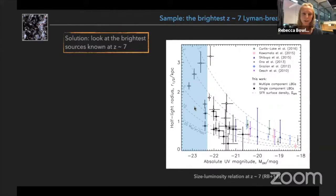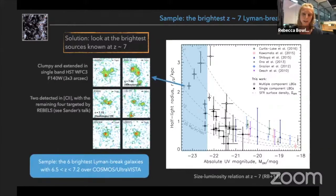And this allows us to really look in more detail at the morphology of the dust relative to the UV emission. So if you look more closely at these six galaxies in the blue box, these are the six objects that I'm going to be talking about today.